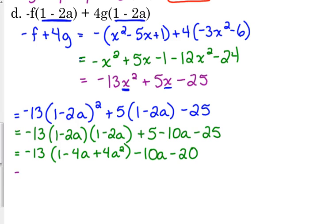Distribute the negative 13. So, negative 13 times 1 is negative 13. Negative 13 times negative 4 is positive 52a. Negative 13 times positive 4a squared is negative 52a squared. And, then my last two terms don't change.